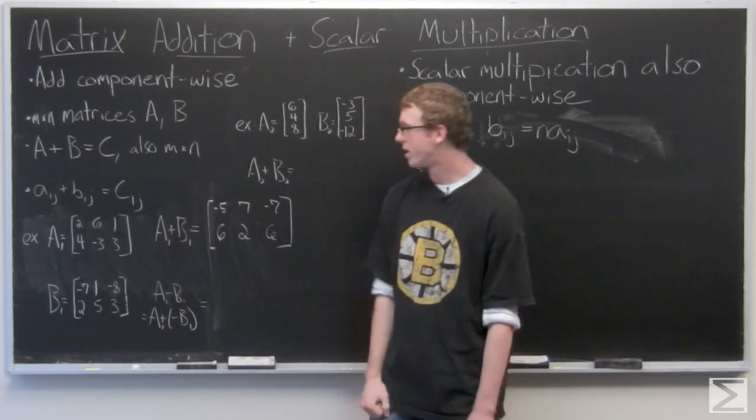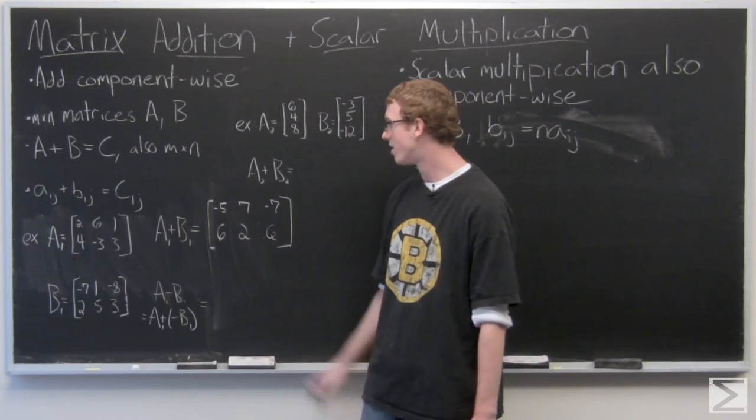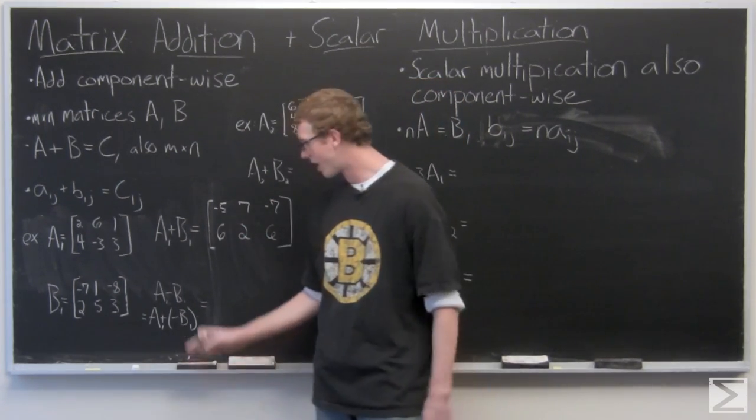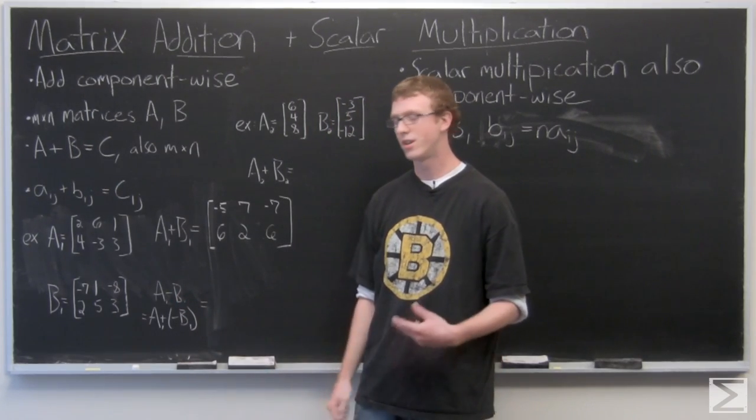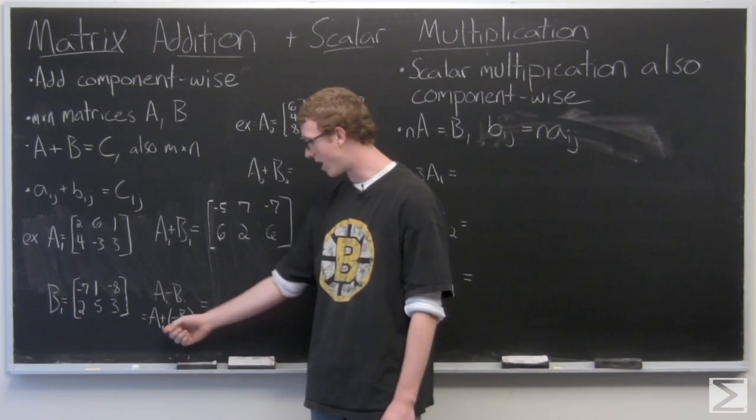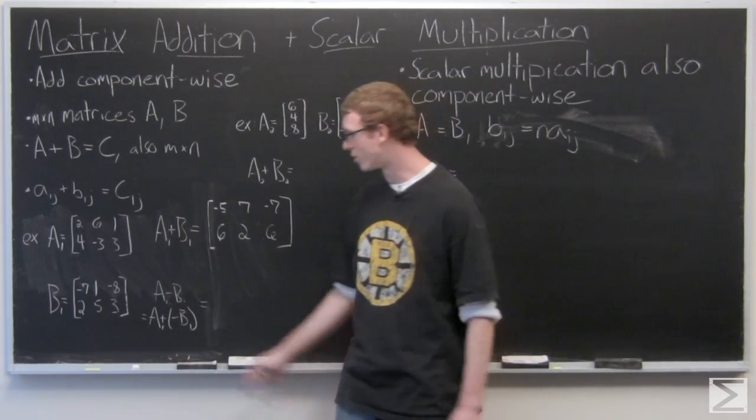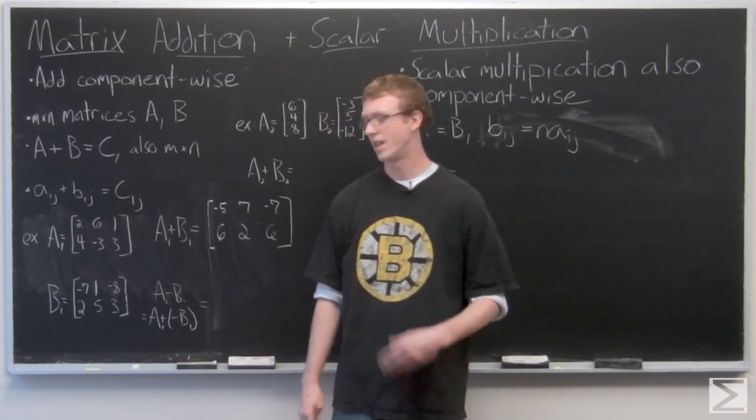So the resultant matrix comes out to negative 5, 7, negative 7, 6, 2, 6. Now we're going to take a look at A1 minus B1, very similar to vectors, how we chose to do A plus a negative B. It just makes a little more sense to multiply the negative 1 through the matrix and then add them.